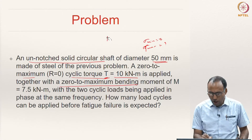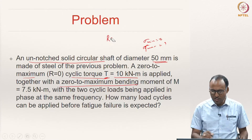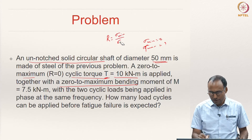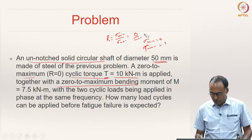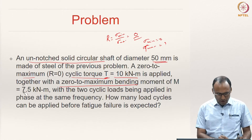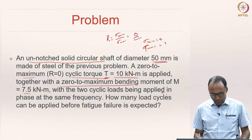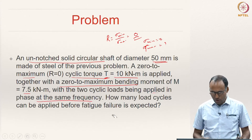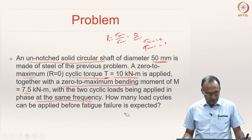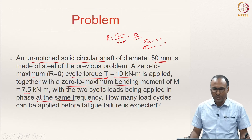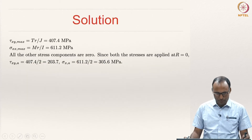That means the stress ratio R = sigma min / sigma max equals 0 — a 0-to-maximum bending moment of 7.5 kilo Newton, with the two cyclic loads being applied in phase at the same frequency. How many load cycles can be applied before fatigue failure can be expected?